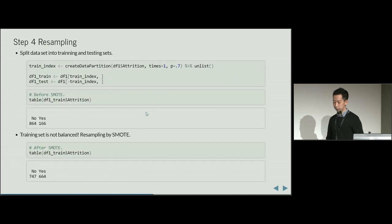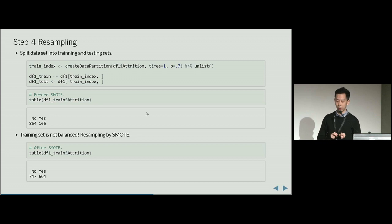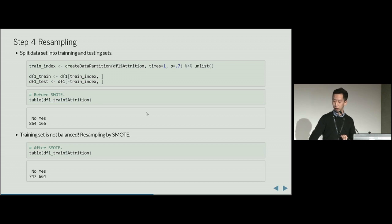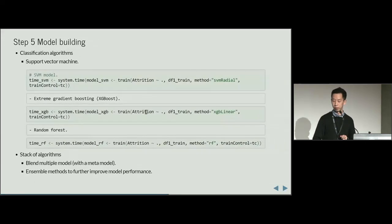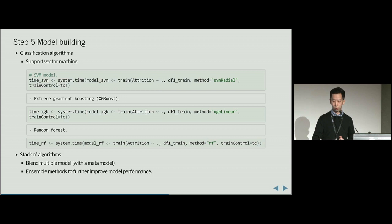One of the critical problems for this specific use case is that usually people who have left the company are the minorities, which means the data is not balanced. We have to apply some technique to rebalance the dataset so we can build a good model. After that comes the modeling part, where we have several choices of algorithms. We can try all of them and do selection among these algorithms in order to choose the optimal one.